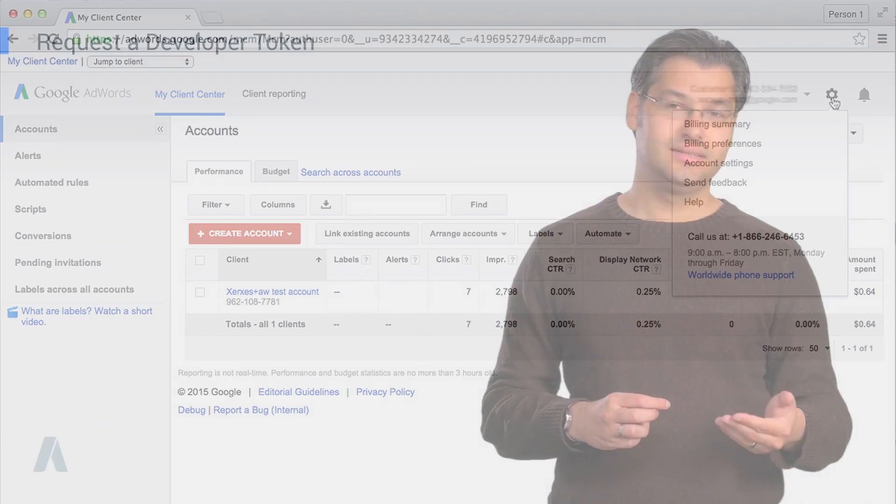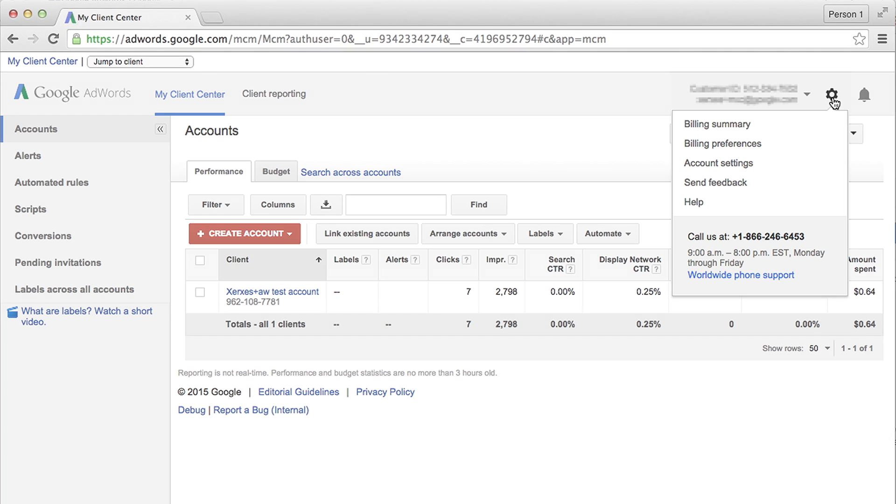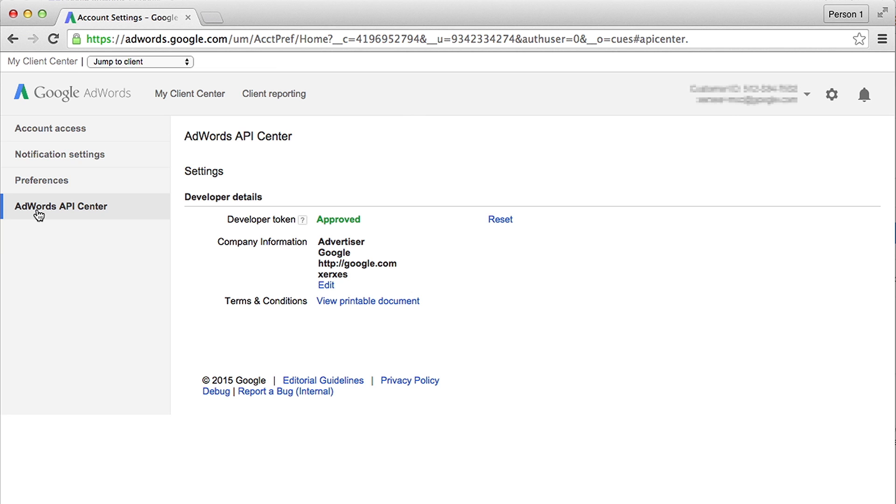Next, request a developer token. This is what allows your application to connect to the API. Log in to your AdWords MCC account. In the gear menu, choose Account Settings. Then in the menu on the left, click AdWords API Center and fill out the form to apply for a developer token.